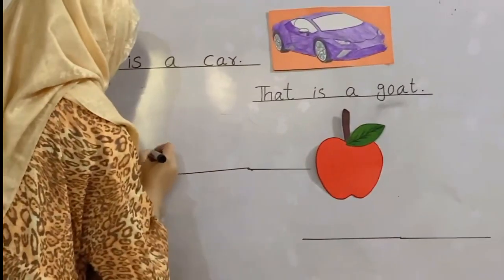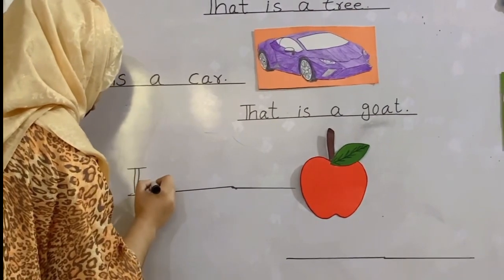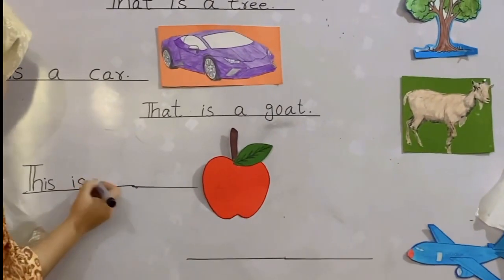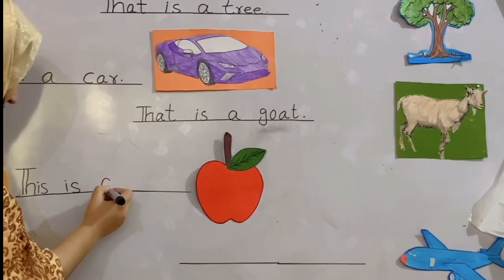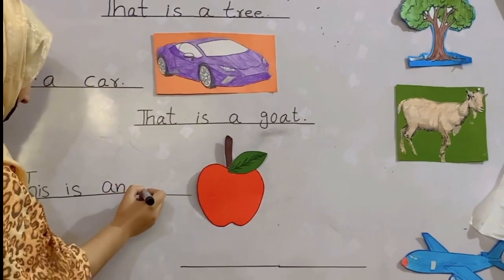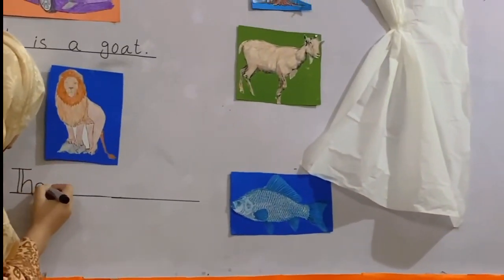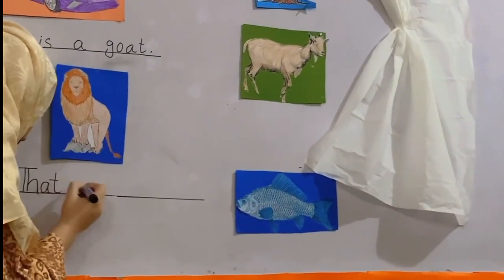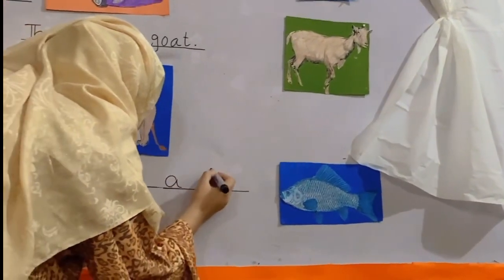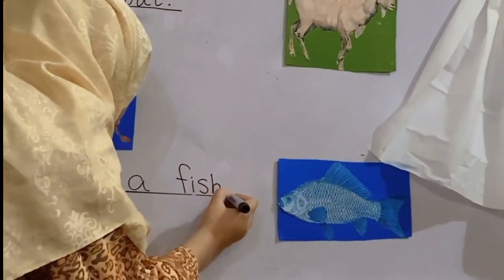Let's see another example: this is an apple. And that is a fish — 'that is a fish.'